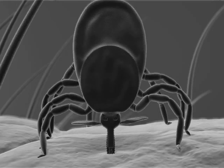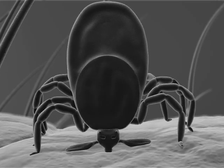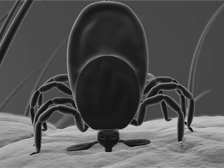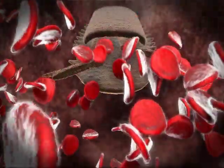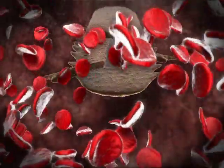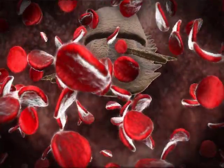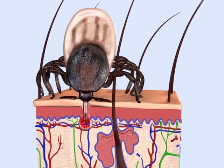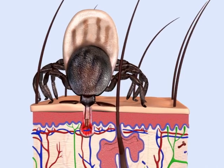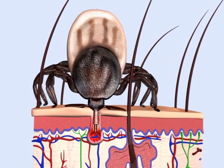Their saliva contains hundreds of pharmacologically active molecules that suppress the host's ability to fend off the invader. The tick slices through small capillaries, creating a pool of blood that remains uncoagulated due to the tick's salivary anticoagulant. Over the next several days, the nymph feeds unnoticed because of its small size and the pain-killing chemicals it secretes, ingesting blood and increasing in size tenfold.